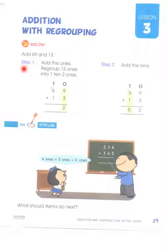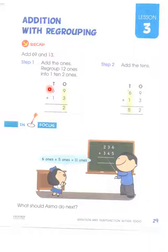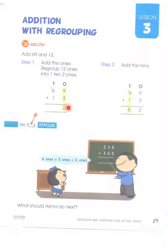In 69 and 13, in Step 1 we add the ones and regroup. 12 ones become 1 ten and 2 ones. In Step 1, we added 9 and 3, which became 12. So we wrote 2 here and carried 1 to the tens side. Then in the next step, 9, 3 and 2 — we copied those — and 6 had a carry of 1, so 6 and 1 makes 7, then 8.